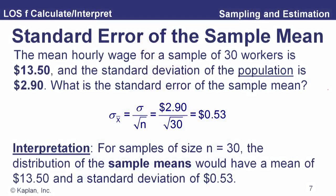For example, the mean hourly wage for a sample of 30 workers is $13.50, and the standard deviation of the population is $2.90. What's the standard error of the sample mean? With a sample size of 30, the standard error equals the population standard deviation divided by the square root of 30, giving us $0.53. So for samples of size 30, the distribution of sample means will have a mean of $13.50 — the same as the population — but a standard deviation of only $0.53.